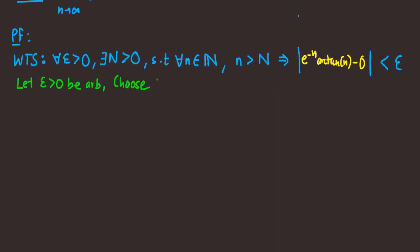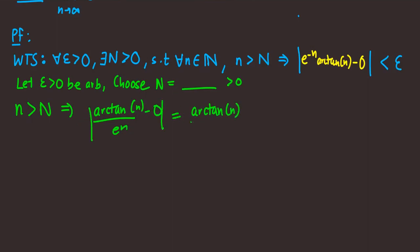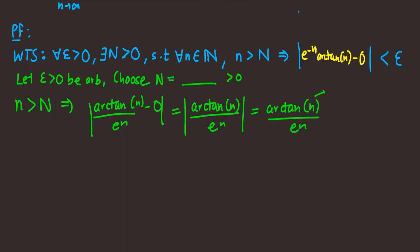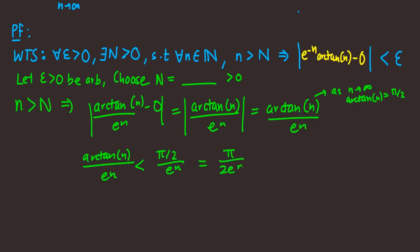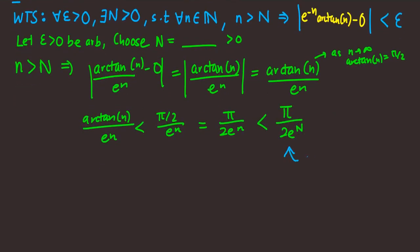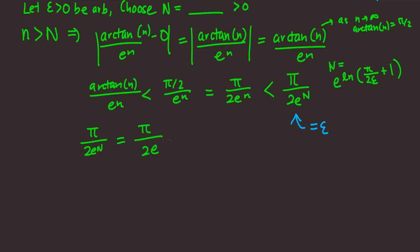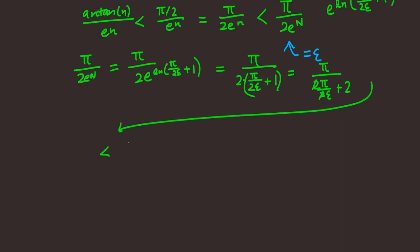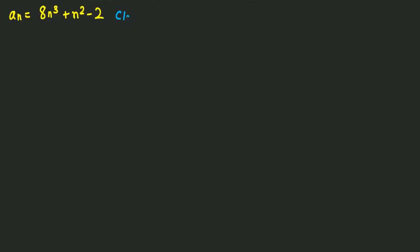We let epsilon greater than 0 be arbitrary and choose N. We suppose the antecedent, take the 0 out, and since n is greater than 0 arctan is always greater than 0 so we can remove the absolute value. As n goes to infinity arctan is bounded by π/2, so we bound above by (π/2)/e^n, giving π/(2e^n). We use ln this time and add 1 to ensure it's not negative: N = ln(π/(2ε)) + 1. Expanding, we get π/(2πe + 2); taking out the 2 to minimize the denominator leaves us with epsilon.